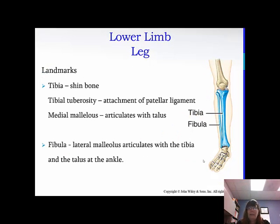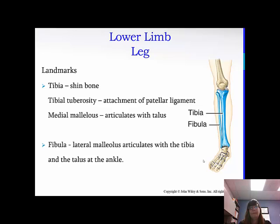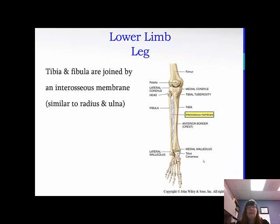The tibia is commonly referred to as your shin bone. The tibial tuberosity is where the patellar ligament attaches, and we'll talk about knee joints in Chapter 9 when we discuss articulations. The medial malleolus articulates with the talus — that is your inner ankle, where it protrudes out. The fibula has the lateral malleolus, which articulates with the tibia and the talus at the ankle — your outer ankle protrusion. The tibia and fibula, just like the radius and ulna, are attached by an interosseous membrane, which helps stabilize and prevent excessive movement between those two bones.